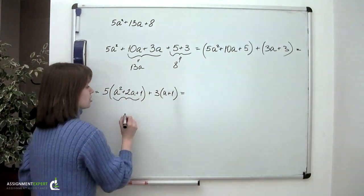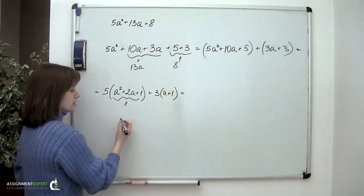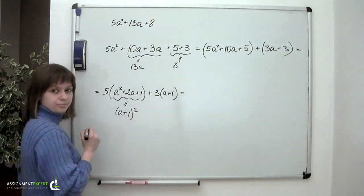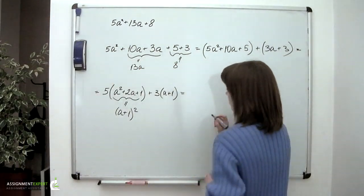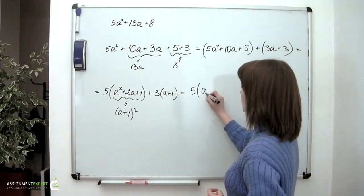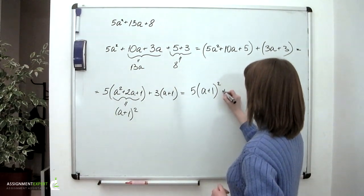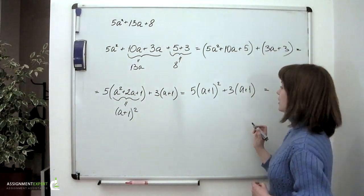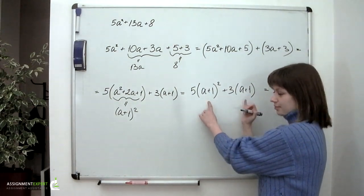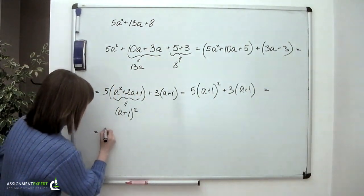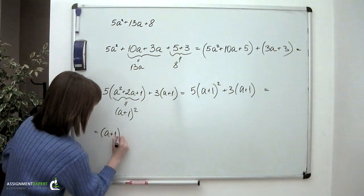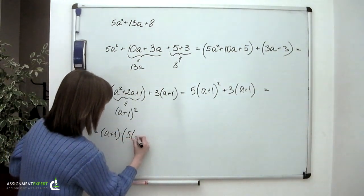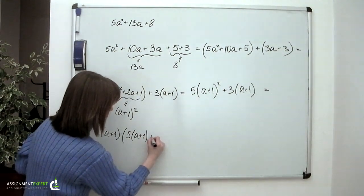Now this expression in the first brackets is nothing else than the complete square a plus 1 to the second. So we now have 5 times a plus 1 squared plus 3 times a plus 1. Let's now factor out a plus 1.